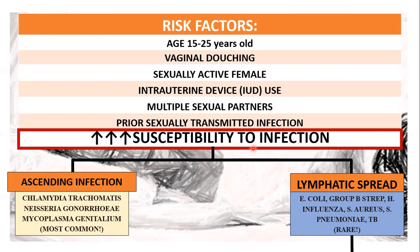There are two types: ascending infection and lymphatic spread. Among the two, ascending infection is the most common etiology for PID. The organisms include Chlamydia trachomatis and Neisseria gonorrhoeae. These two have a co-infection pattern for PID and are the most implicated organisms.